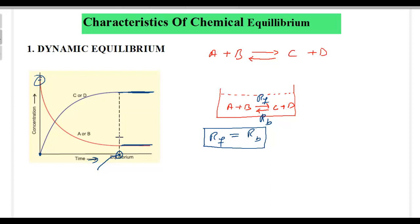Equilibrium is dynamic in nature — that is one of the characteristic features of equilibrium. What does it mean that equilibrium is dynamic? Both the rate of forward reaction and the rate of backward reaction are going on. It doesn't mean that the reaction has stopped — that is why the concentrations do not change. Reactants are continuously changing into the products, and products are also continuously changing into the reactants. But since both rates are the same, the net effect is zero.